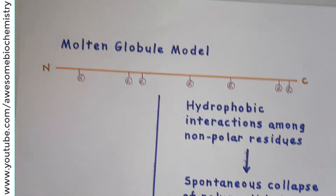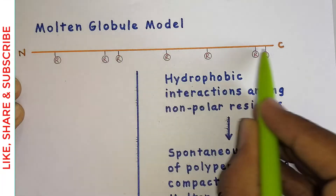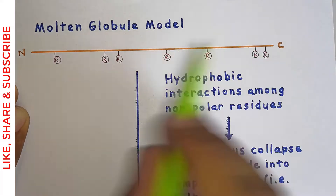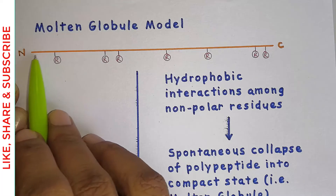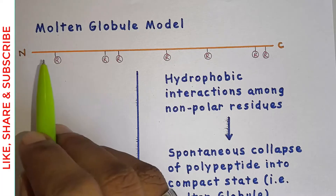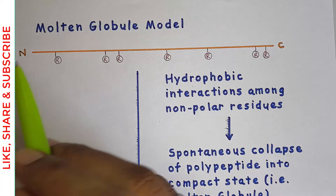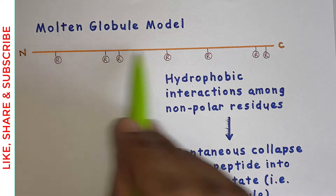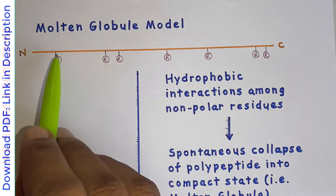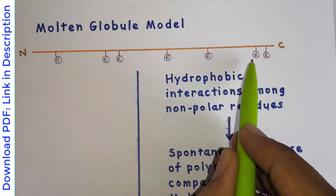Now let's discuss the second model — the molten globule model. Here again is a polypeptide chain with an N-terminal and C-terminal. The polypeptide chain is made up of amino acids, each with a side chain represented by R. These side chains can be broadly divided into two groups: non-polar and polar. In this diagram, all the R groups shown represent only non-polar side chains.